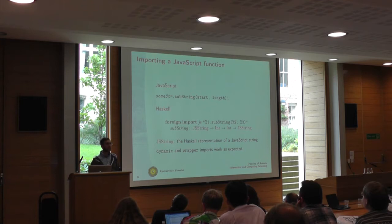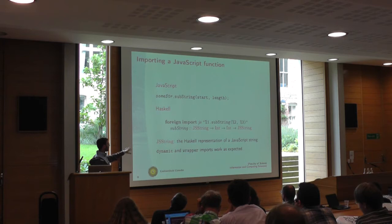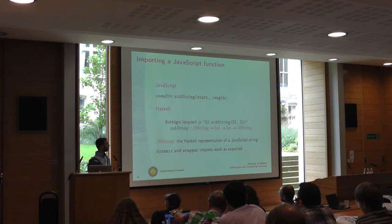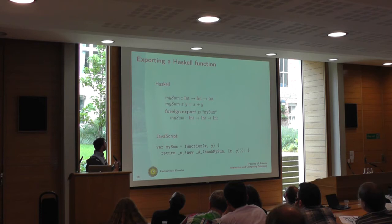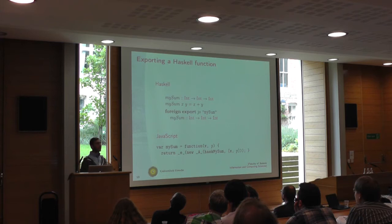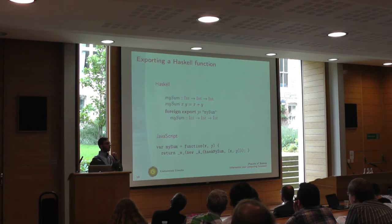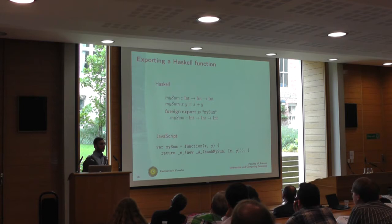In this case, JsString is the real native JavaScript string, while a String from Haskell would be some internal representation of our system. This is how to import functionality from JavaScript. You also want to export functionality — if you want to provide your Haskell program to the outside world, because maybe someone else is using a JavaScript library as their main tool of choice. So we can also export our Haskell functions, and then they are available from JavaScript by just calling mySum.